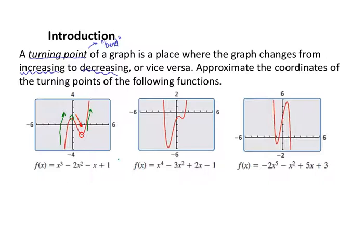Our task here is to approximate what these turning point coordinates are. Looking at the first graph and trying to find where it first switched from increasing to decreasing — the units count by ones — I'd say that's about negative 0.2, close to 1. And that second turning point where we switched from decreasing to increasing, I'd say about positive 1.2 and negative 1.6. These are approximations — we're just estimating where those are happening.